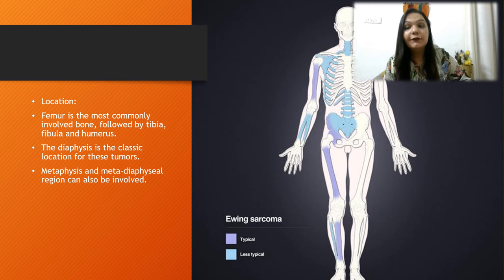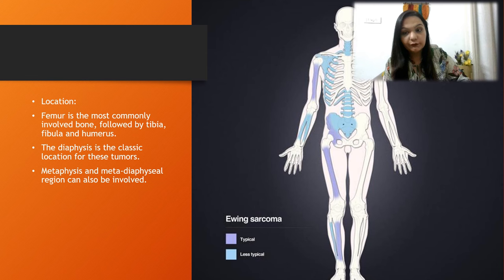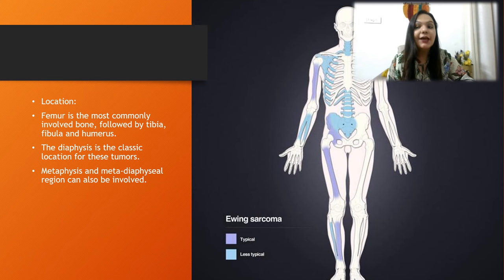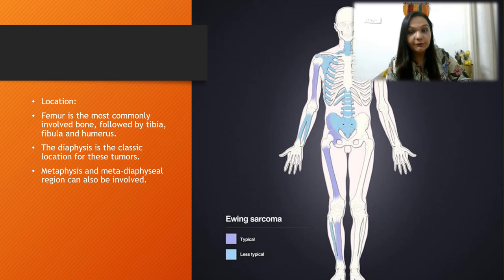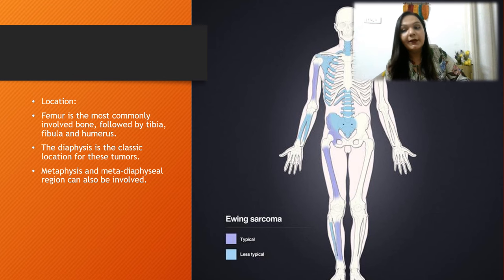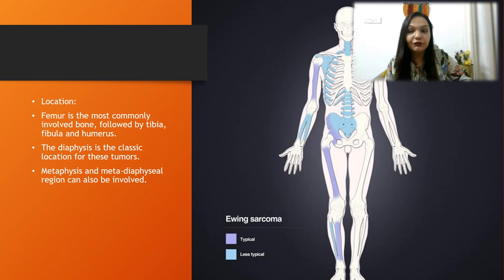The femur is the most commonly involved bone, followed by tibia, fibula, and humerus. Most frequently involved bones are the long tubular bones, then the flat bones. Diaphysis is the classical location for these tumours, and the metaphysis and metadiaphyseal region may also be involved.